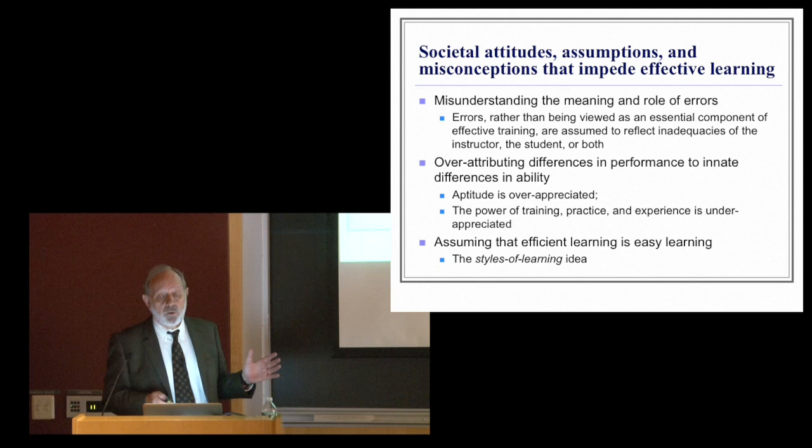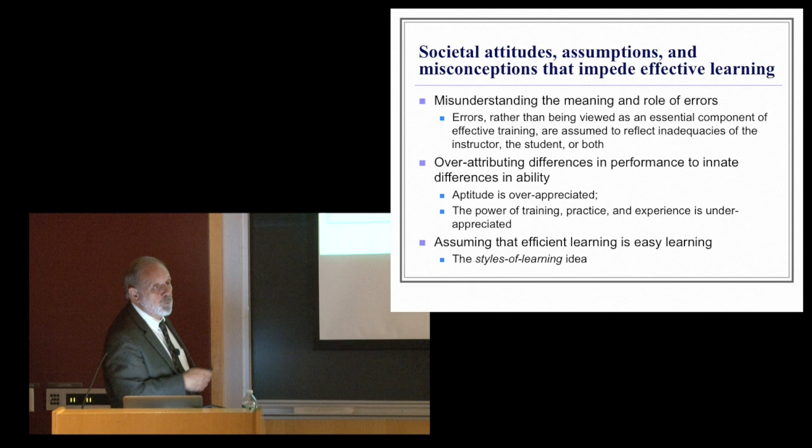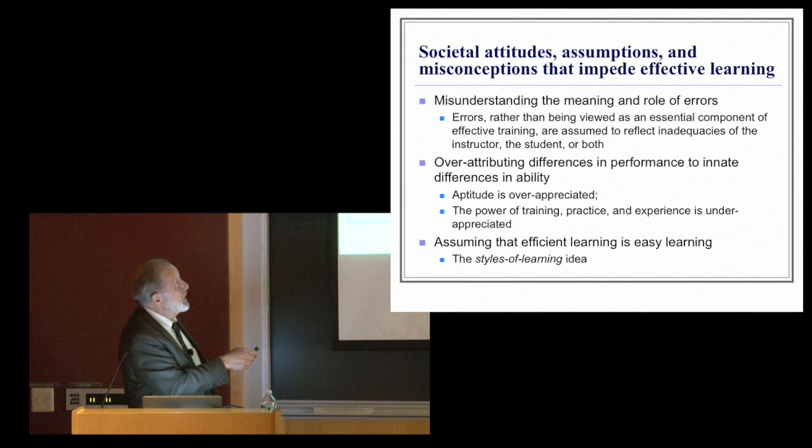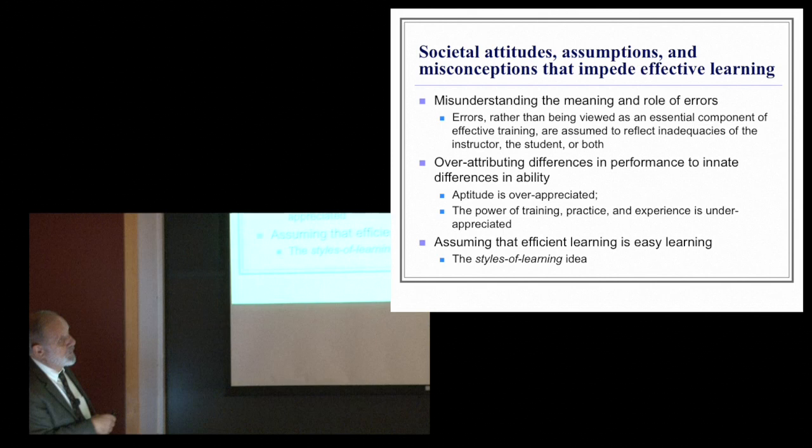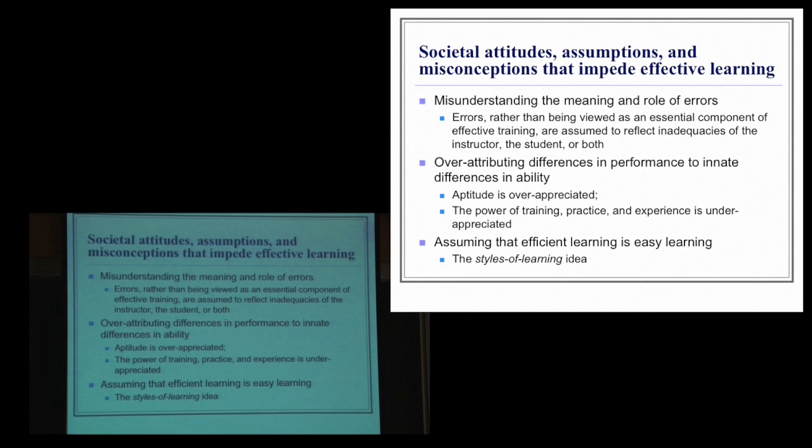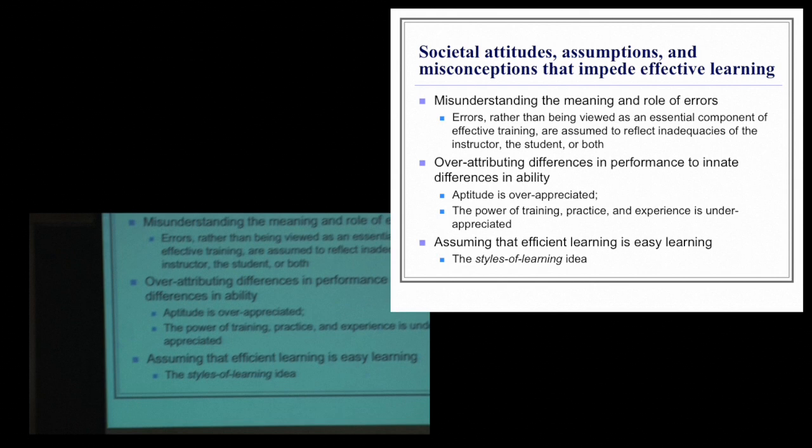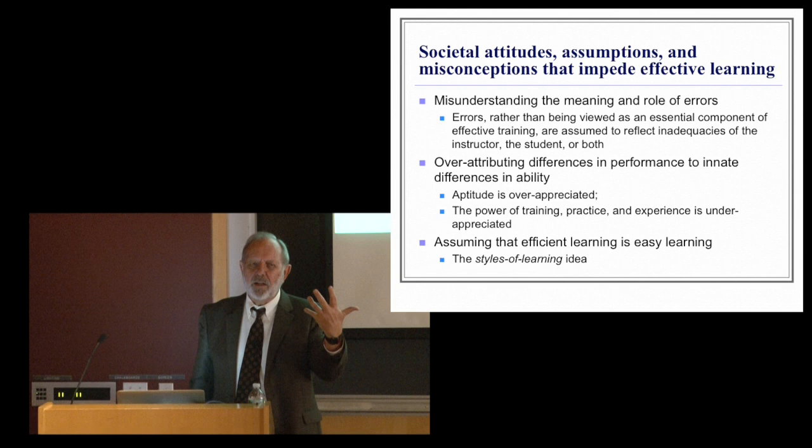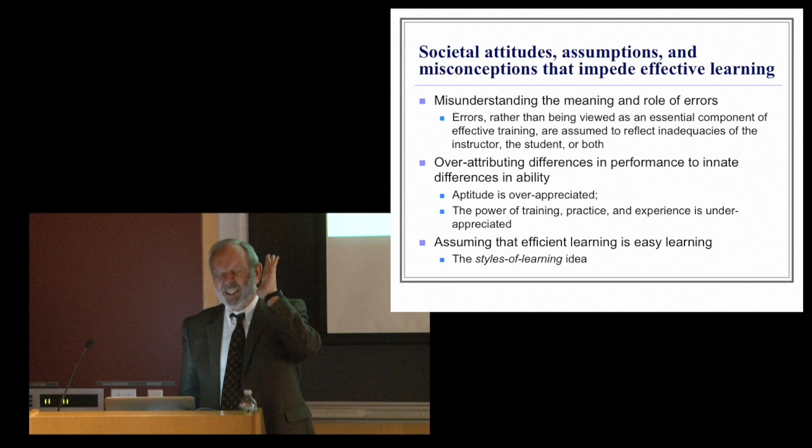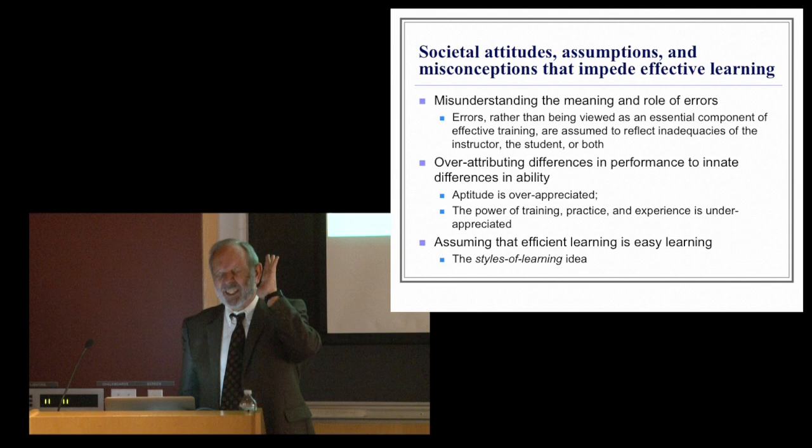Also, the concluding comment is just that societal attitudes, assumptions, and so on, can also play a role that impede effective learning. So we might misunderstand the meaning and role of errors. Think they're to be avoided, whereas optimal instruction may often, in fact, induce errors. Over attributing the differences in performance to innate. It's, I didn't do well because it's not my thing. I'm looking for my thing. My family, my ethnic group, whatever, our thing. We're good at that. We're not. People labeling themselves and not ever really exploring their potential to learn. And one is just assuming that efficient learning is easy learning. That somehow people will just do things the way that meshes with my learning style. Here's where I'll lose rapport with some of you, if you're learning styles fans. But this incredibly popular approach to learning styles just kind of has behind it this meshing hypothesis, which is that if things will just be presented a way that will mesh with my style of learning, it will just kind of happen.